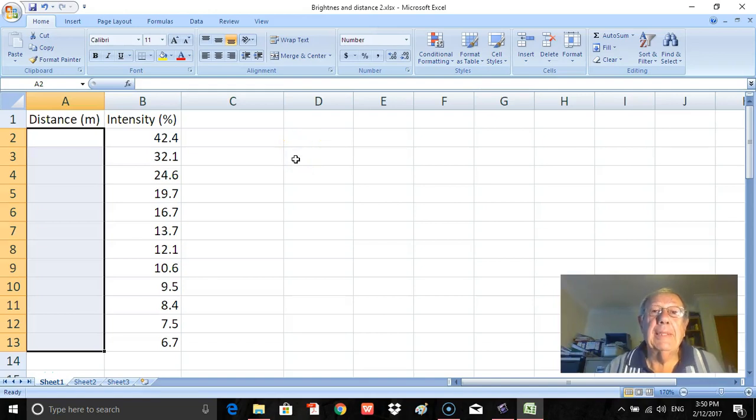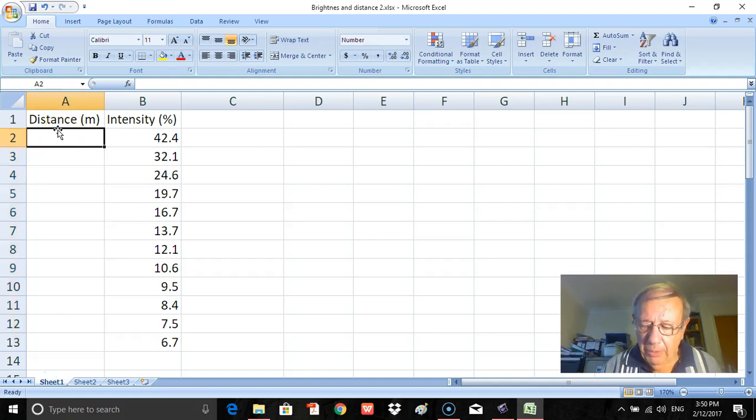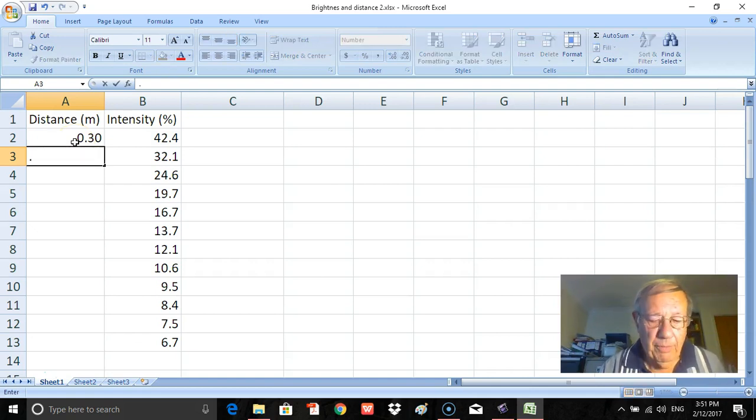Well, here we are in the spreadsheet and we're ready to process the results. Now what I've got already here on the spreadsheet is the distance and the intensity. I'll put those down here, and then the distance I'll put that in.